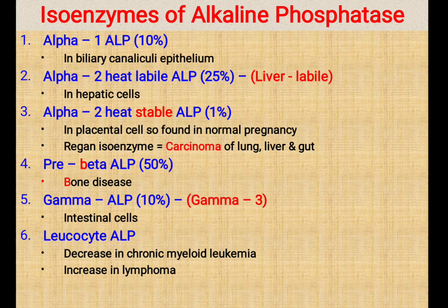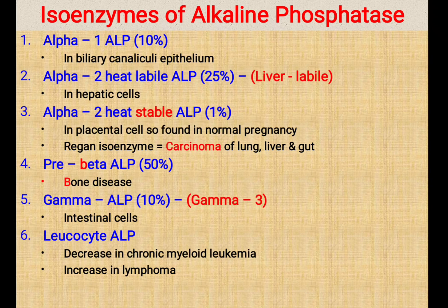The reason we need to learn the isoenzymes of ALP is that when studying liver function tests, you learn that ALP level is increased in obstructive jaundice. This is correct because biliary canalicular epithelium generates this ALP, and whenever there is obstruction and damage of the biliary canaliculi, ALP level increases in the blood. However, biliary-origin ALP is only 10% of the total ALP. So injury to the bone, intestinal disease, lung carcinoma, carcinoma of liver or gut, or liver damage can all also increase ALP levels.